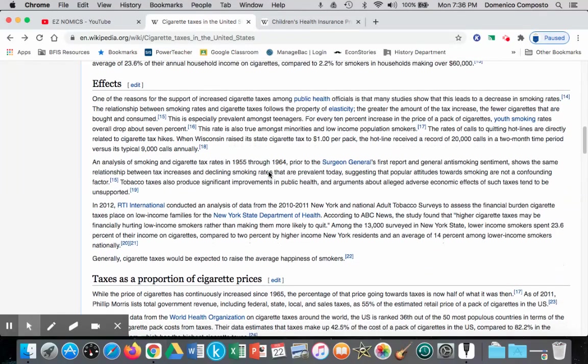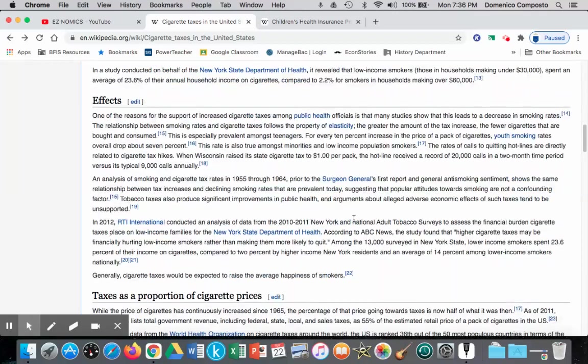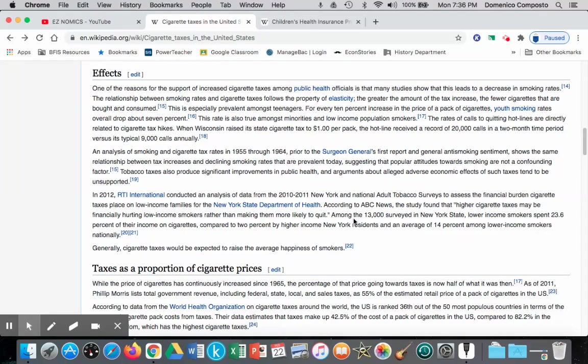Some critics of the policy of this 2009 sales tax highlighted that it would impact negatively lower income families and this tax would be regressive. So here we can look at the statistic here, very important, that the higher cigarette taxes may be financially hurting lower income smokers rather than making them more likely to quit. And in a survey of 13,000 people in the state of New York, lower income smokers spent about almost a quarter, 23.6% of their total income on cigarettes, leaving just three quarters for the other necessities and luxuries. That compares to just 2% of higher income New York residents. So the higher the income, the lower the tax to that person, in this case we see 2%. And so for the lower income families, the tax rises and it becomes a significant portion of their total income, and that's what we call a regressive tax.